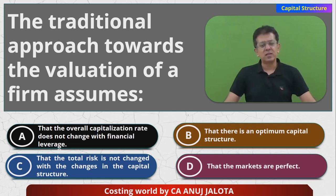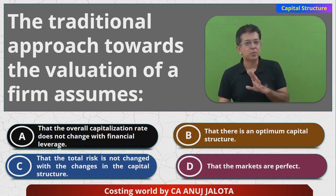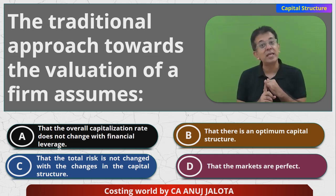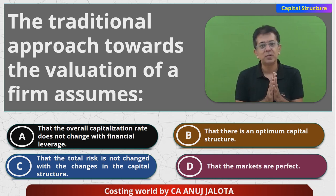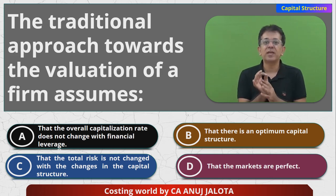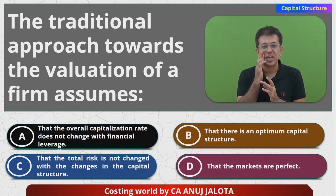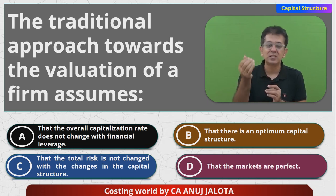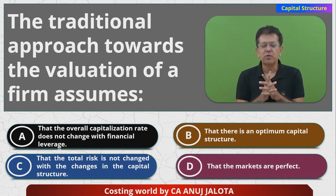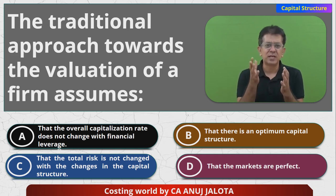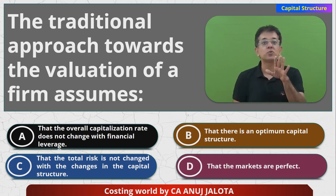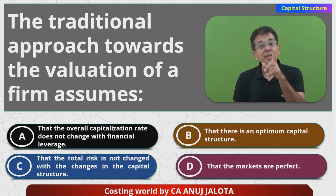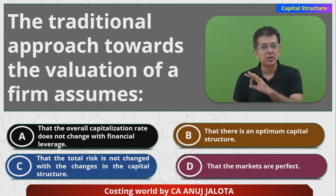We have done three approaches in this case. One of them was the Net Income approach. The Net Income approach says that the kind of capital structure that is best is where debt is highest. So wherever debt is highest, automatically our cost will be least because debt is cheaper than equity — that is what the NI method says.